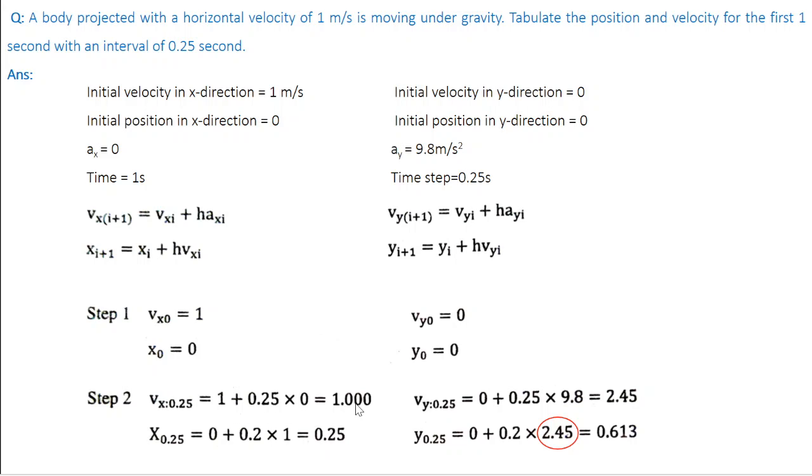And the position x of 0.25 equal to x_0 which is 0 plus step size 0.25 multiplied by v_x of 0 which is 1. Sorry for the typo here. This should have been 0.25. So 0 plus 0.25 which is 0.25 here.